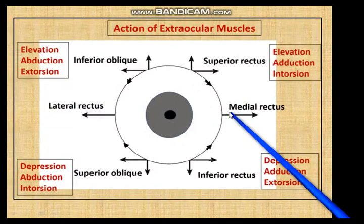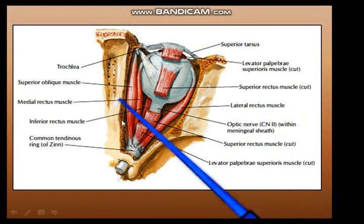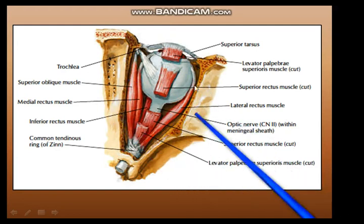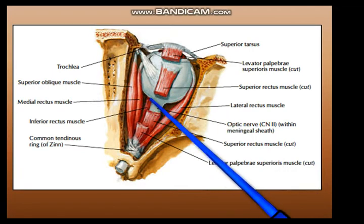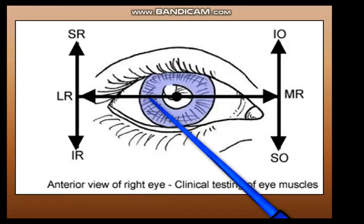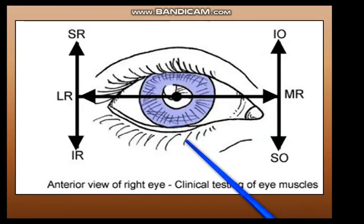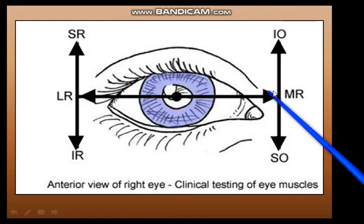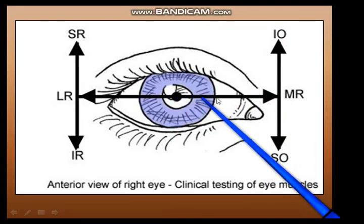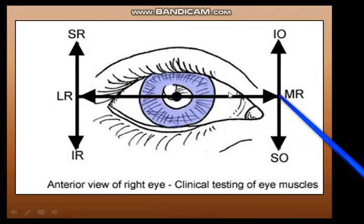We have been looking at the diagram of the action of the extraocular muscles — you have to commit this to memory. Then you have to study the orientation of the extraocular muscles and calculate the directions of their pull and the composite action of some of these muscles. There is another diagram to keep in mind: the clinical testing of the eye muscles, again considering the right eye.